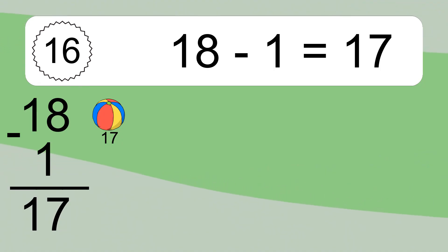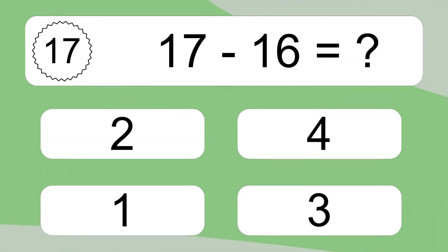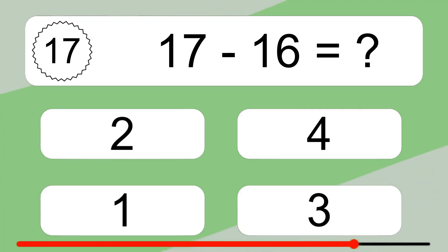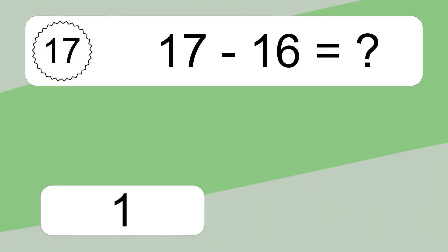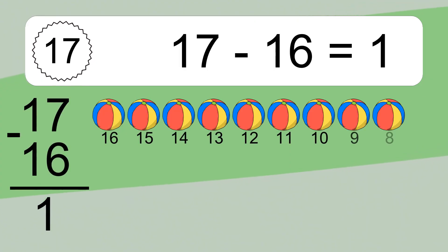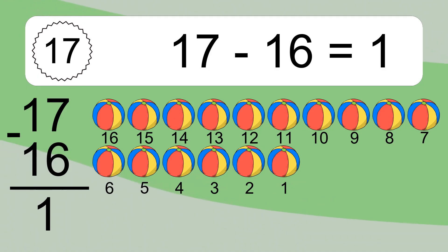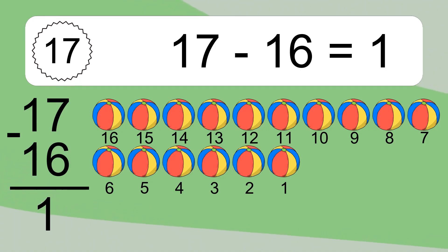17 minus 16 equals what? 17 minus 16 equals 1. Let's count it. 16, 15, 14, 13, 12, 11, 10, 9, 8, 7, 6, 5, 4, 3, 2, 1.